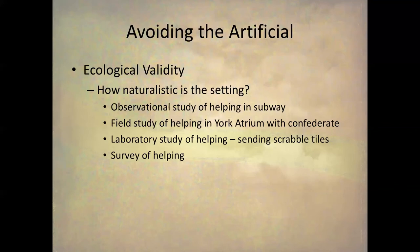Now we go to a laboratory study on helping where you help other people by sending them Scrabble tiles. First, you're in the laboratory — that's not a natural situation. Second, you normally don't help people by sending them Scrabble tiles. So now we're getting even more artificial. And then finally, as an experiment on helping, I give you a survey and describe different situations on paper, asking you to circle a number to indicate how you respond. We don't usually interact with other people by reading about something and then circling a number — so that's very artificial, very low ecological validity.